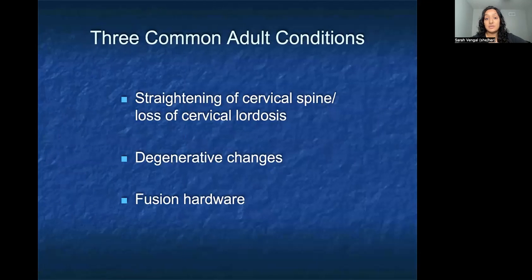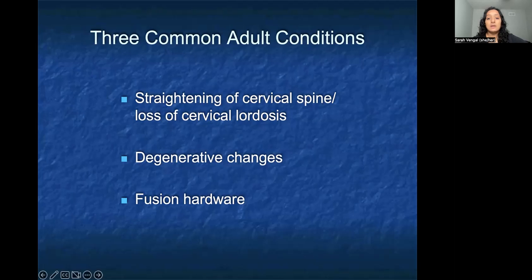Moving on to three common adult conditions: I want to discuss the straightening of the cervical spine or loss of cervical lordosis, findings for degenerative change, and fusion hardware and what that looks like.